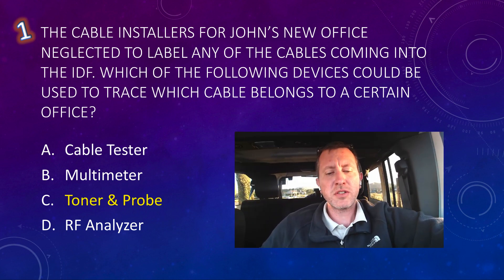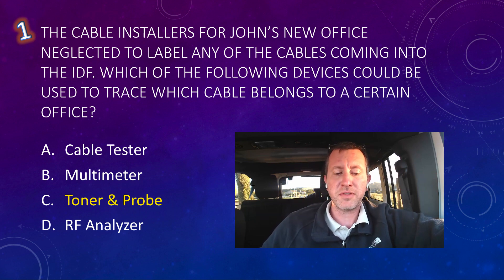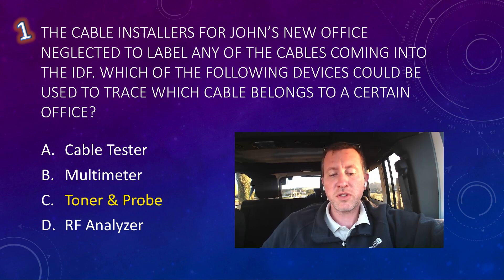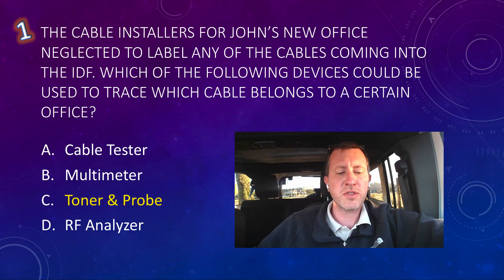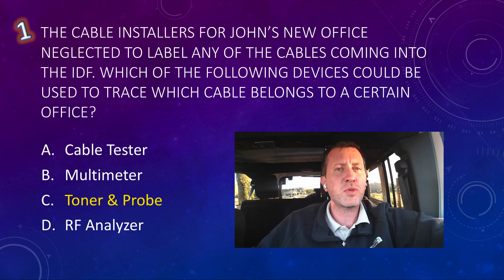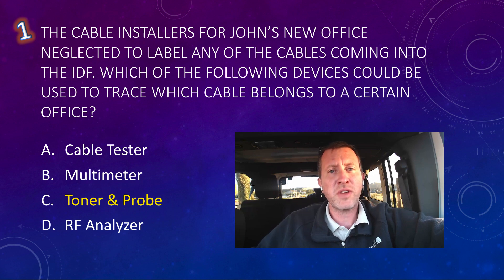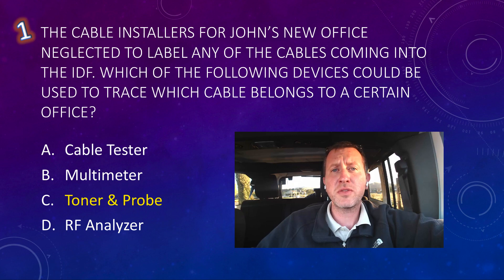Question number one: the cable installers for John's new office neglected to label any of the cables coming into the IDF. Which of the following devices could be used to trace which cable belongs to a certain office? This is kind of like a telecom closet where cables come in, run to patch panels, and go out to switches. A cable tester will test to make sure the cable is actually wired correctly.